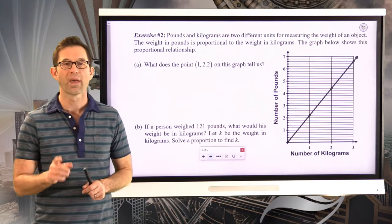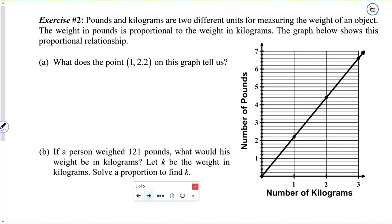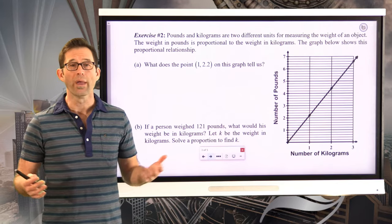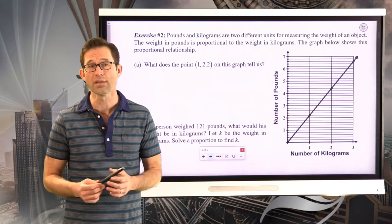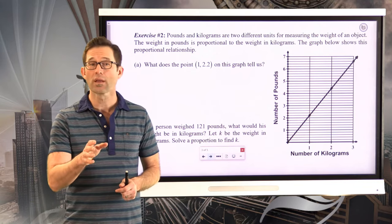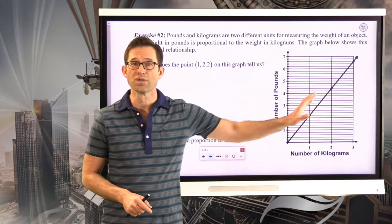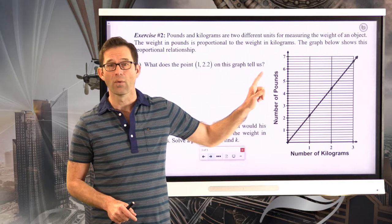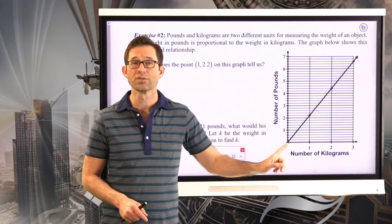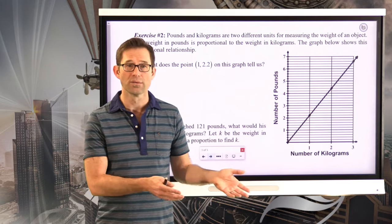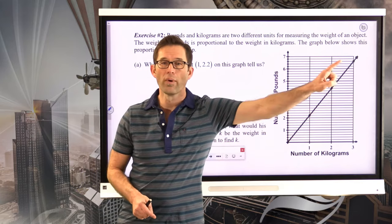Let's take a look at the next problem, exercise number two. Pounds and kilograms are two different units for measuring the weight of an object. The weight in pounds is proportional to the weight in kilograms. The graph below shows this proportional relationship. So in this country, we do our weights in pounds. On the other hand, if you were to go to a European country, or let's be honest, basically anywhere except for the United States, you would find that they measure their weights in kilograms. This graph then shows us the relationship between your weight in kilograms and your weight in pounds. Keep in mind, we can tell immediately from the graph it's a proportional relationship because it goes to the point zero zero, and that makes sense. If I weigh zero kilograms, I'm going to weigh zero pounds. And all the points lie on a straight line.